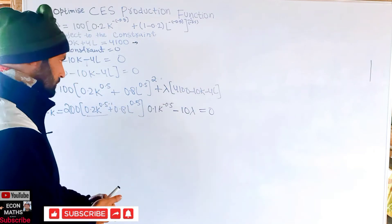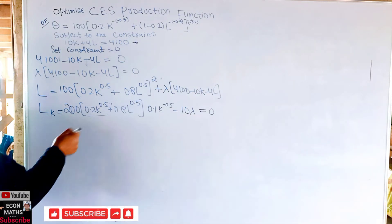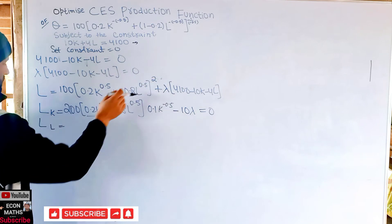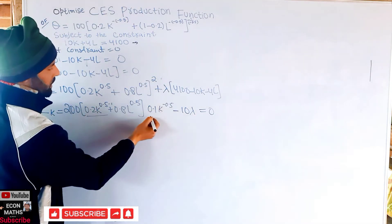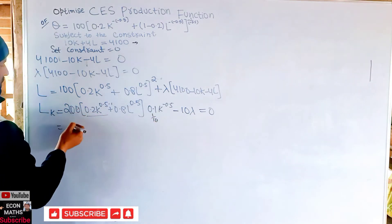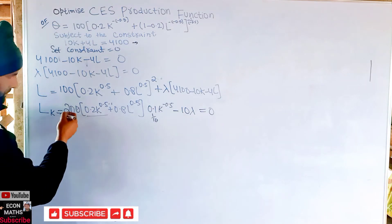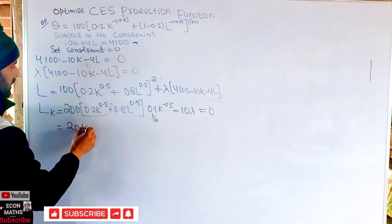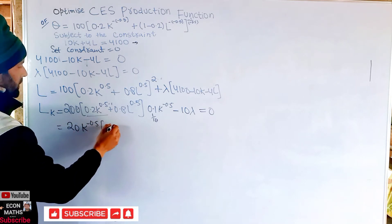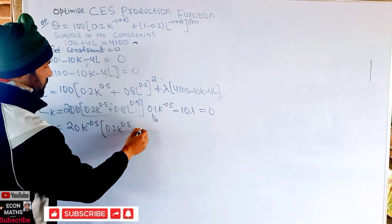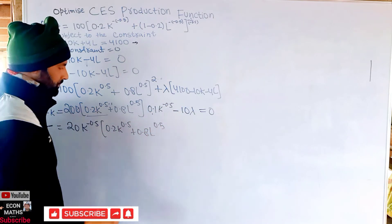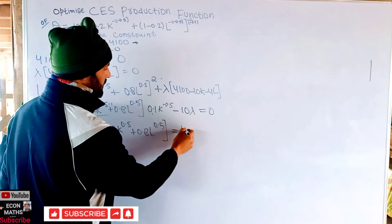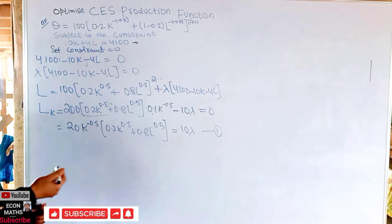Simplifying: 0.1 cancels with the 10 from 200 to give 20, so we get: 20 K^(−0.5) × (0.2 K^(0.5) + 0.8 L^(0.5)) − 10λ = 0. Transposing, this becomes 20 K^(−0.5) × (0.2 K^(0.5) + 0.8 L^(0.5)) = 10λ. Let this be Equation 1.